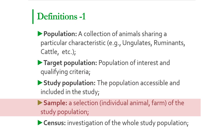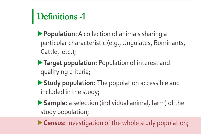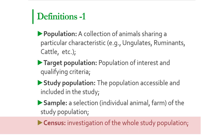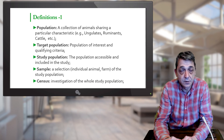Sample is a selected part — which could be an individual animal, farm, or village — of the study population. Census is the investigation including the whole study population. Censuses are very expensive and time-consuming to carry out, but sometimes they are the only way to obtain the information of interest. For example, if we are going to control tuberculosis and brucellosis, we have to sample the whole population in order to determine which animals are sick and which are not, and also to withdraw those animals from the population.